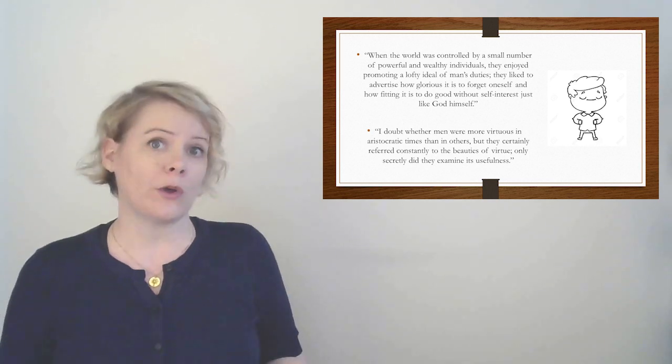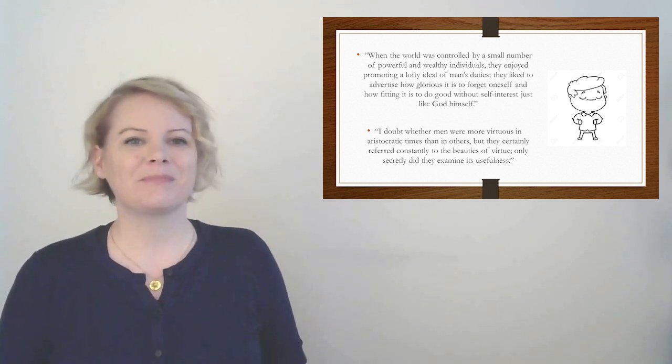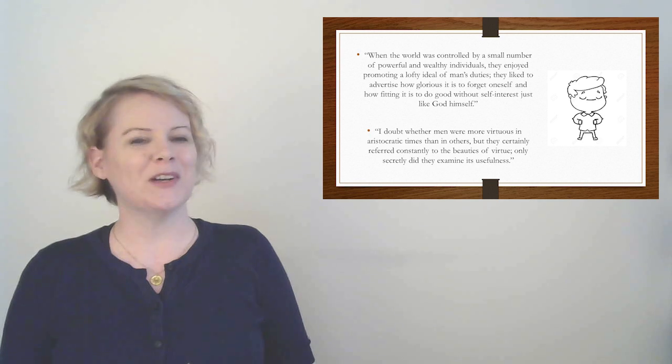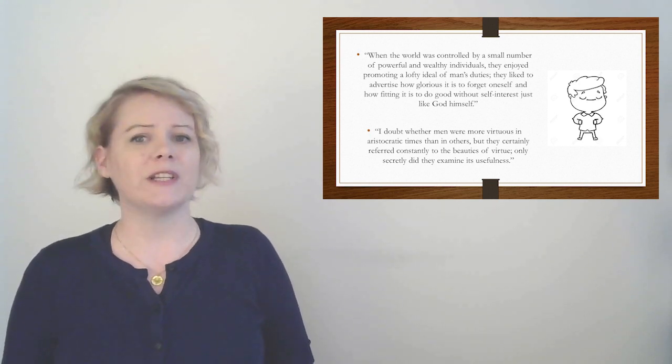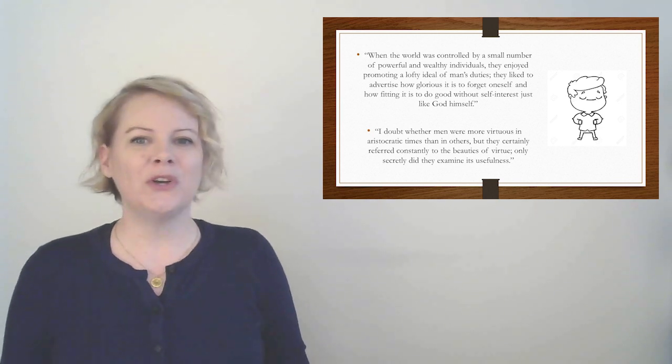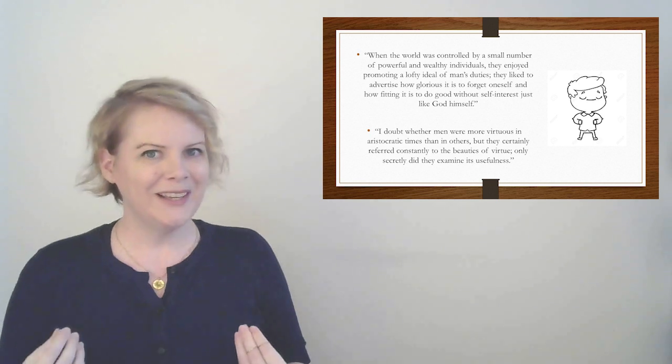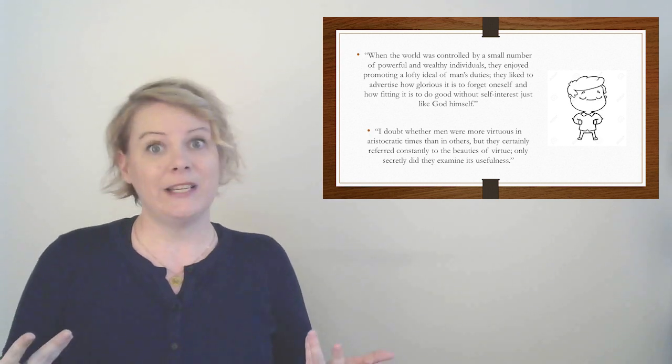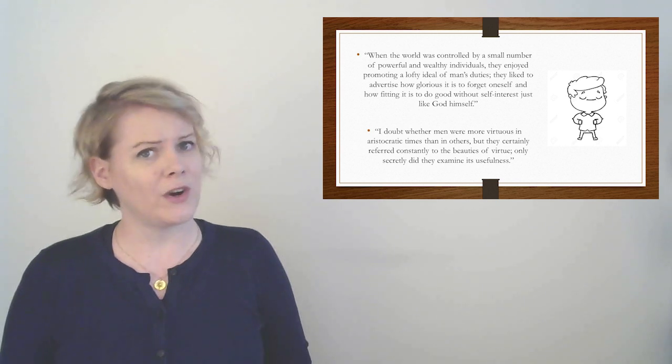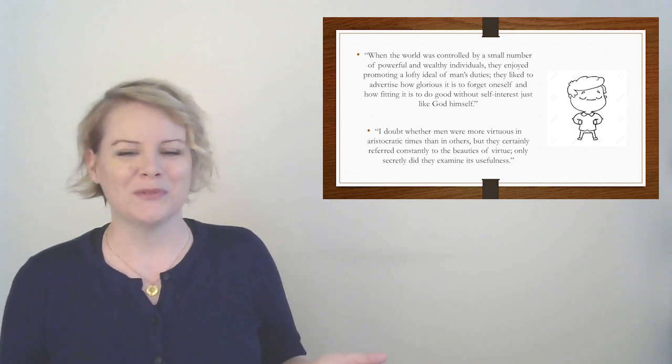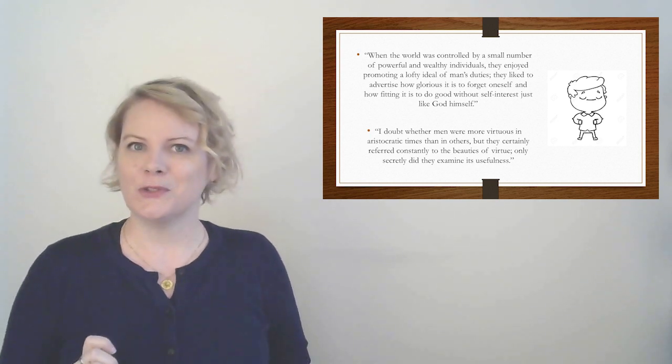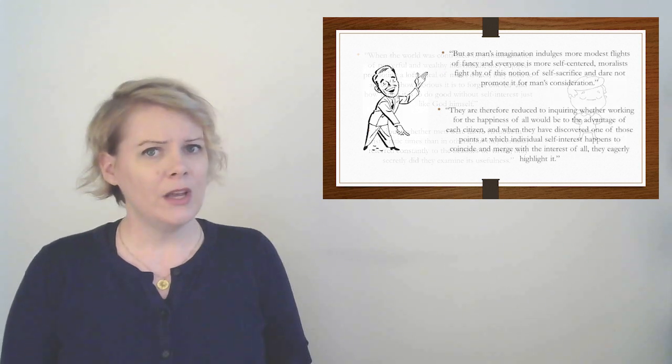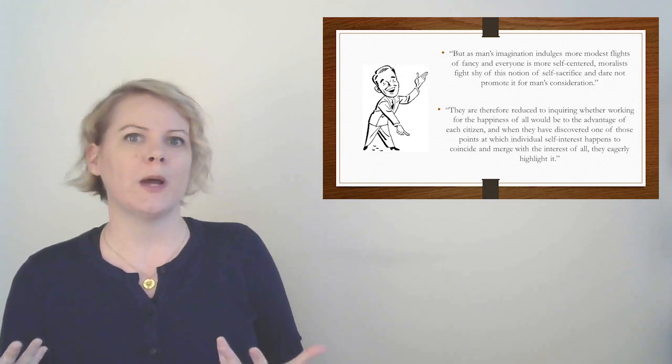So we begin our discussion today with chapter eight. How Americans counteract individualism by the doctrine of self-interest properly understood. Tocqueville was amazing at chapter names. Honestly, that's one of the best parts of the whole book. So basically, he's trying to understand how Americans deal with self-interest when they have to live in society. How do you balance the individual versus the whole? So he starts by talking about individualism. When the world was controlled by a small number of powerful and wealthy individuals, they enjoyed promoting a lofty ideal of man's duties. They liked to advertise how glorious it is to forget oneself, and how fitting it is to do good without self-interest just like God himself.